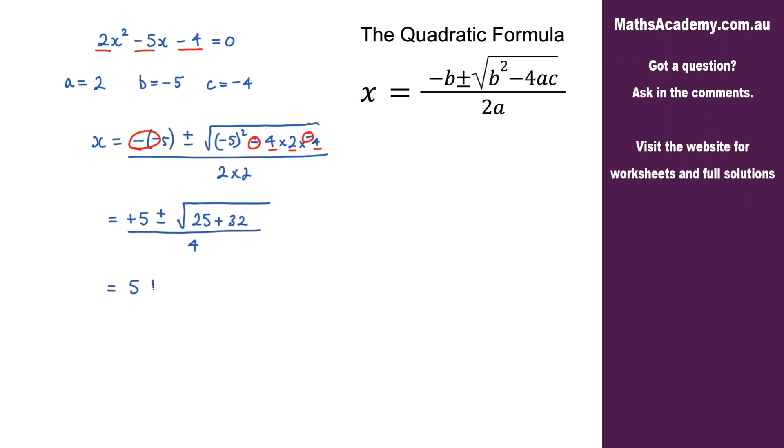So we've got 5 plus or minus the square root, this is 57, and that is all over 4.